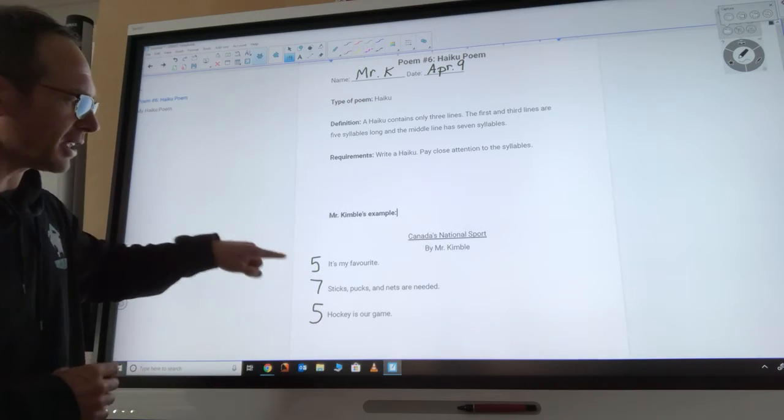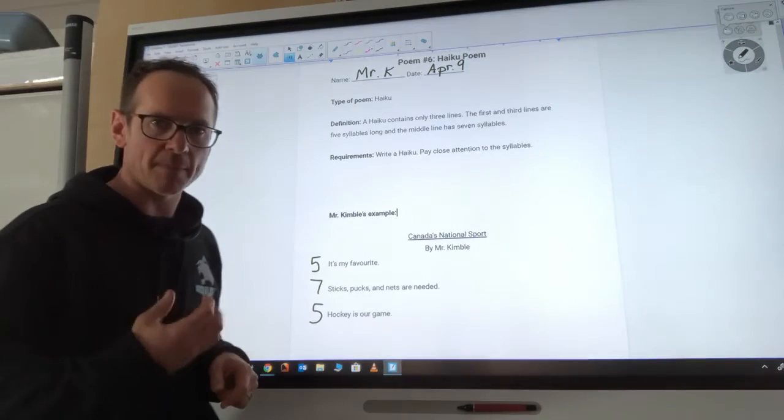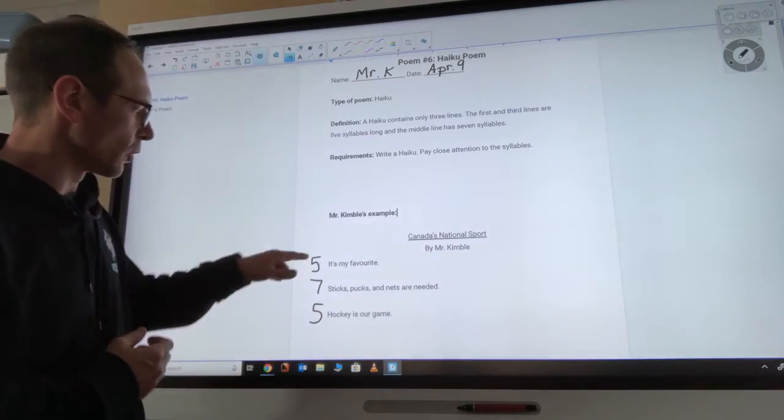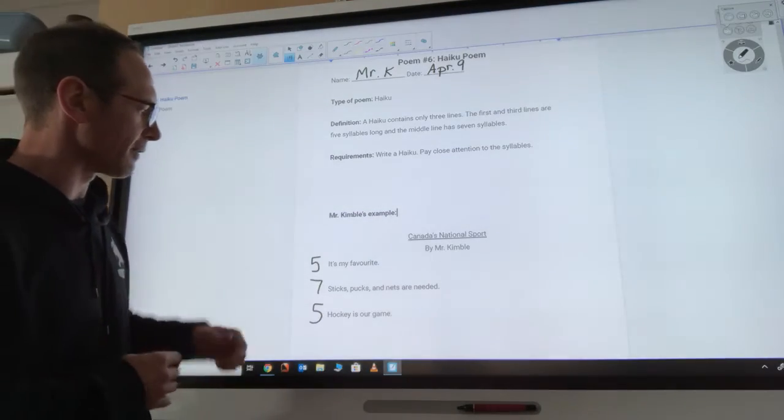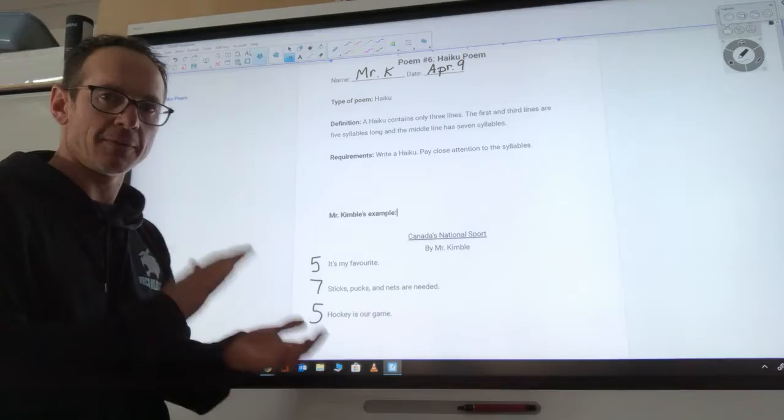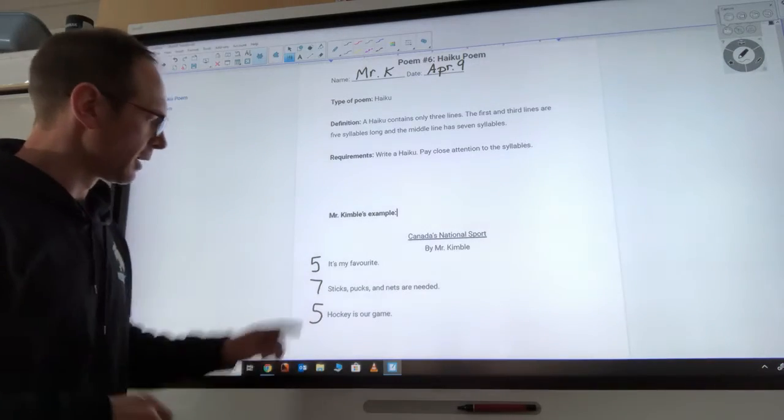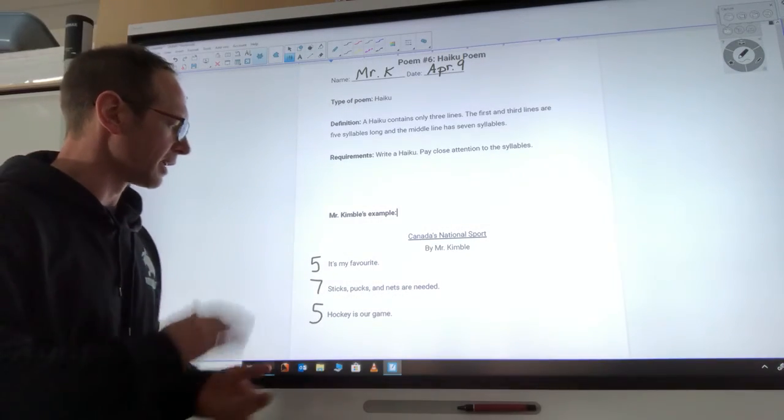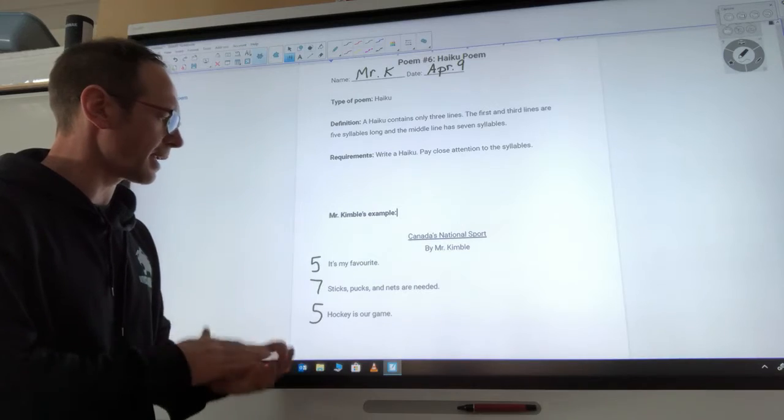Now if you look at each of these lines, they all have the right amount of syllables. So the first line has to have five: it's my favorite, five. The second one has to have seven: sticks pucks and nets are needed, seven syllables.